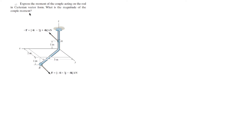We're going to do this problem that says: express the moment of the couple acting on the routing partition in vector form. What is the magnitude of the couple moment? For this problem we have point A and point B, so we're going to find the vector that goes from A to B. To do that we need to find A and B.